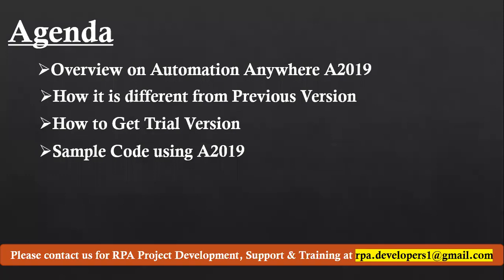Today in this video we are going to discuss this agenda: first we will talk about Automation Anywhere A2019 and how it is different from the previous version. One good thing is that Automation Anywhere is giving a trial version — the community edition — for A2019. So if you are interested to explore or learn it, you can go ahead and download the A2019 community edition.